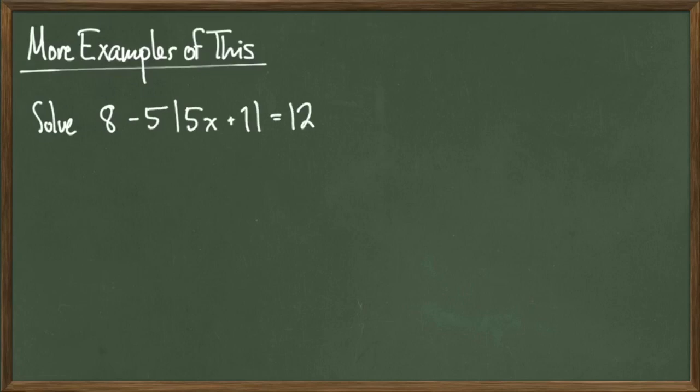Our last example will look at an absolute value equation. Consider 8 minus 5 times absolute value of 5x plus 1 equals 12. I'm going to solve this through so that I only have the absolute value expression on the left-hand side, and all numbers are on the right-hand side.